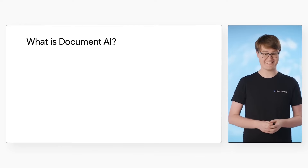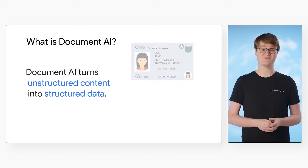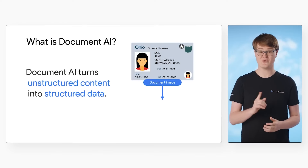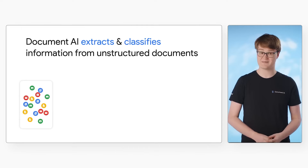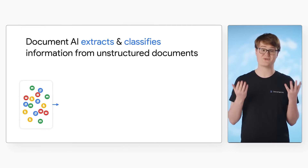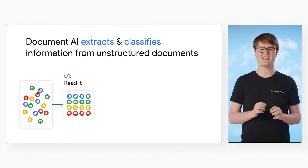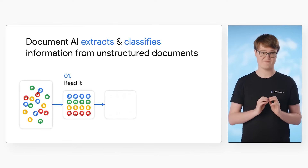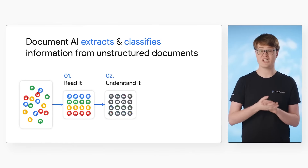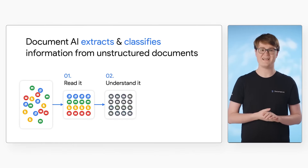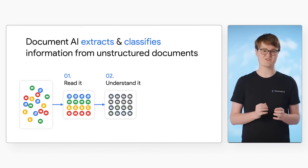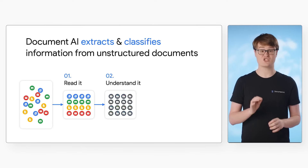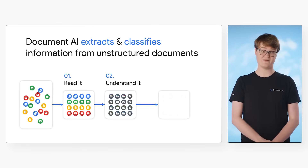And this is where Document AI comes in. Doc AI is Google Cloud's managed service to turn your unstructured content into structured data. Document AI is an end-to-end cloud-based platform for document processing. Not only does it read and ingest your documents, it understands the spatial structure of the document. For example, if you run a general form through a form parser, it recognizes there are questions and answers in your form, and you'll get those back as key-value pairs. With this data in a structured format, you can begin to make it useful.